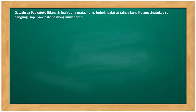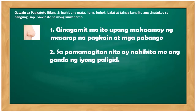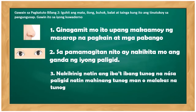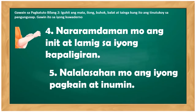Gawain bilang dalawa: iguhit ang mata, ilong, buhok, balat, at tainga kung ito ay naitutukoy ng pangungusap. Gawin ito sa iyong kwaderno. Number one: ginagamit mo ito upang magkaamoy ng masarap na pagkain at mga pabango — ito ay ilong. Number two: sa pamamagitan nito ay nakikita mo ang ganda ng iyong paligid — ito ay mata. Number three: nakikinig natin ng iba't ibang tunog na nasa paligid — ang sagot ay tainga. Number four: nararamdaman mo ang init at lamig sa iyong kapaligiran — ang ating balat. Number five: nalalasahan mo ang iyong pagkain at inumin — ito ay dila.